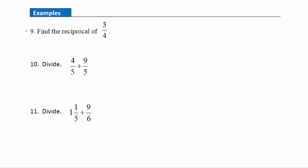Example 9: we're asked to find the reciprocal of 3/4. The easy way to do that is just flip it — so the reciprocal of 3/4 is 4/3. As a note, reciprocals when multiplied together give us 1. So 3/4 times 4/3: we can divide a common factor of 3 out and a common factor of 4 out, and you can see why a fraction times its reciprocal gives us 1 — all the common factors divide right out.